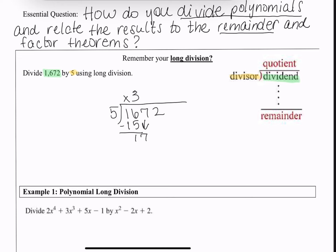Bring down the 7 to make 17. 5 times what gets close to 17? Another 3 times — 3 times 5 is 15. Subtracting, we get 2. Bring that other 2 down. How many times will 5 go into 22? 4 times. 4 times 5 is 20. Subtract to be left with 2, and that is our remainder. What we have on top is the quotient.